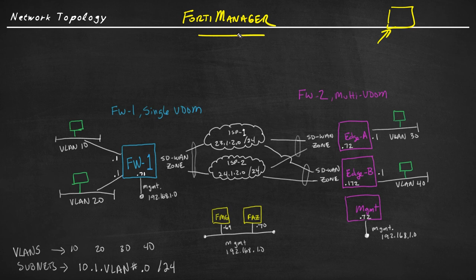FortiManager has a few different options regarding how we can implement it. We can have FortiManager in the cloud, which is a licensed feature. We can have a FortiManager appliance sitting on our network, which is also licensed. And we can also have a FortiManager virtual machine on-prem at our location, also licensed, that can allow us to work with and manage our multiple FortiGate devices.